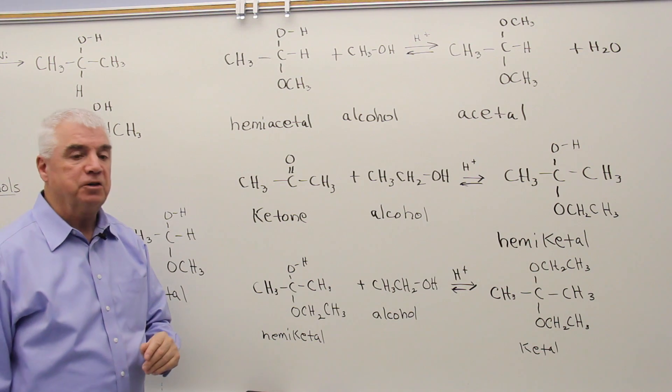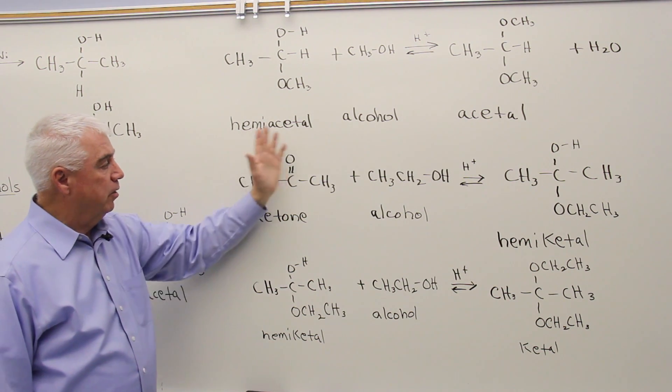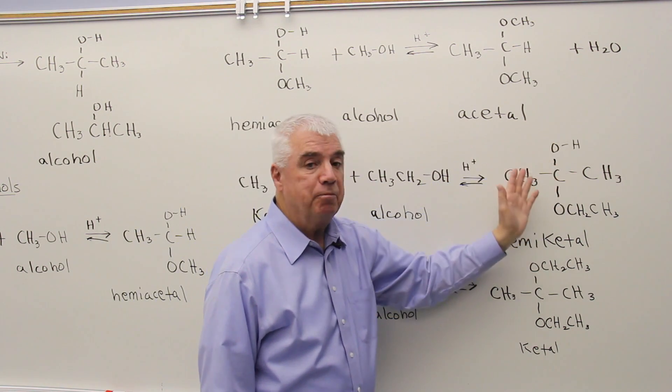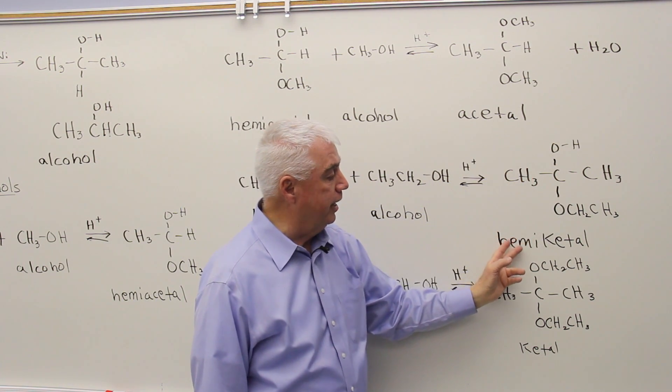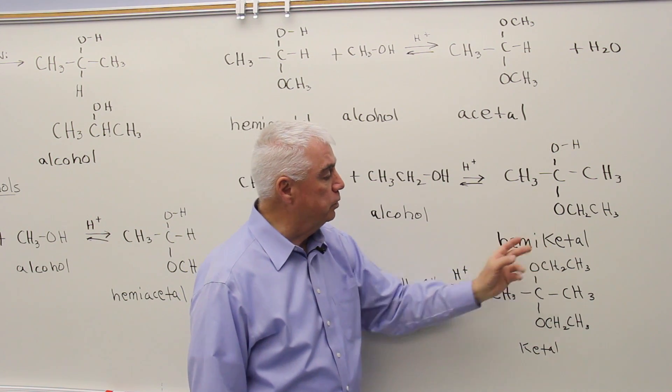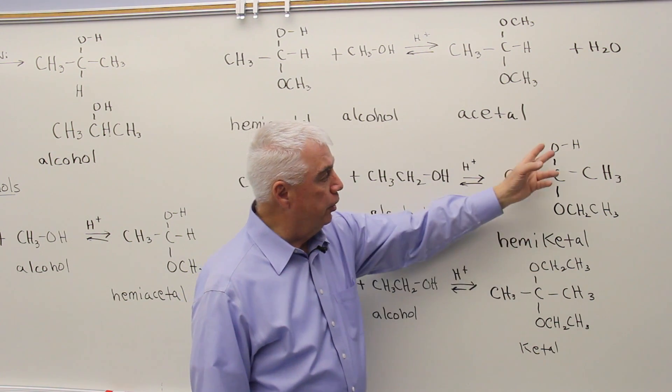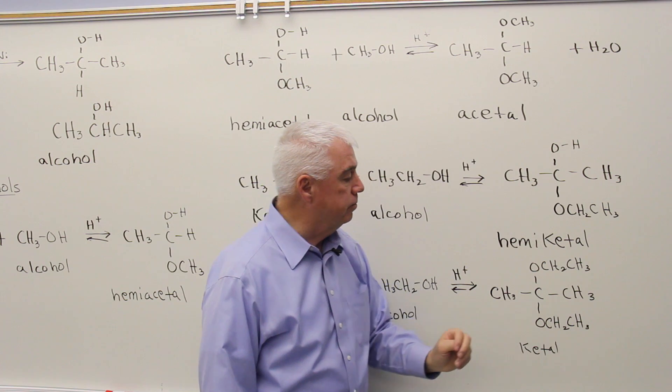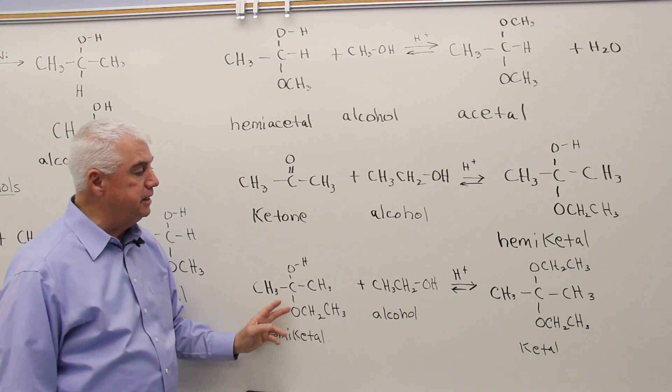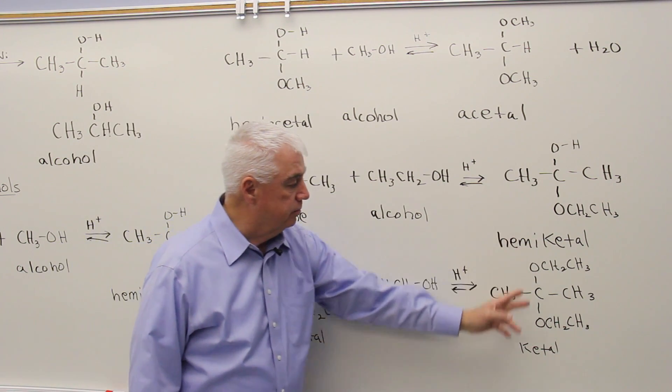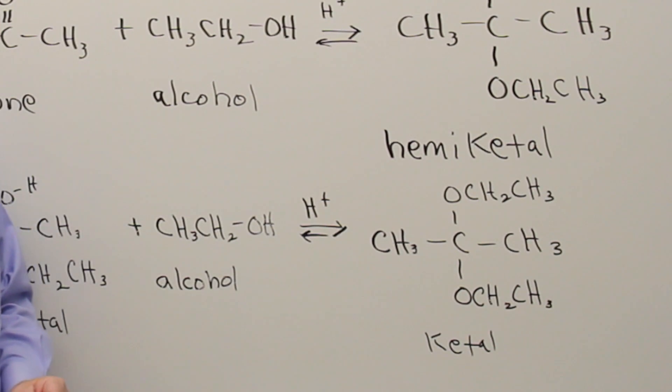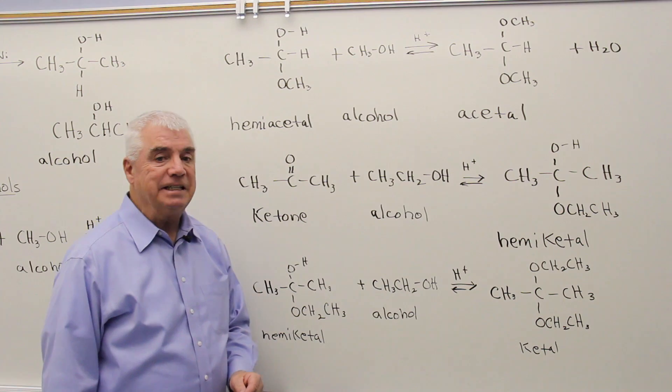Well, ketones can do this exact same thing. We've got a ketone plus an alcohol to give us a hemi product. This time we call it a hemi-ketal. The K reminding us that the ketone was a starting material. An OH with an OR. And then if we react a second molecule of alcohol with that hemi-ketal, we get a product where the carbon now has two OR groups attached to it. That's the ketal.